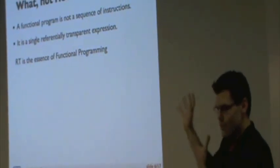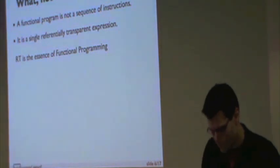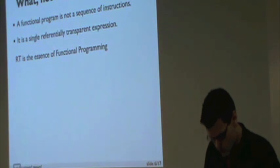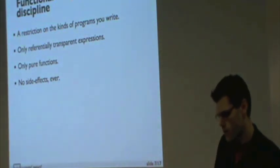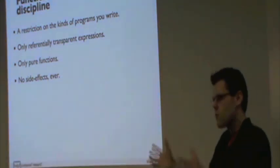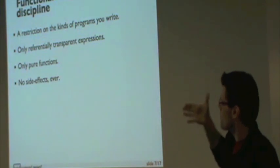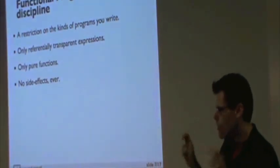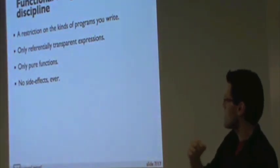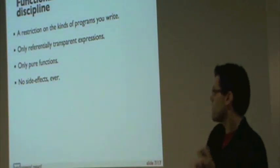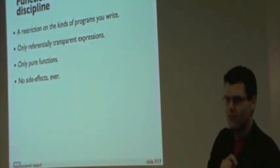Referential transparency is the essence of functional programming. There's a paper called 'The Essence of Functional Programming' that talks about this. Pure functional programming is a commitment more than a programming paradigm. It's not like there's functional programming versus other kinds - functional programming is a subset of all programming, and it can be done in any language. It's a restriction: you only write referentially transparent expressions. Your functions are always pure. No side effects, ever.